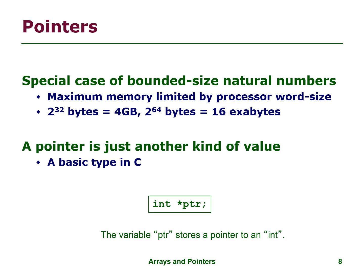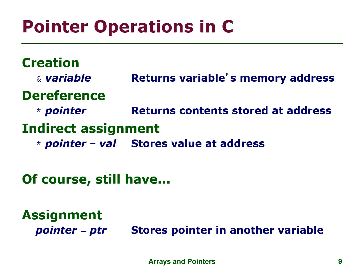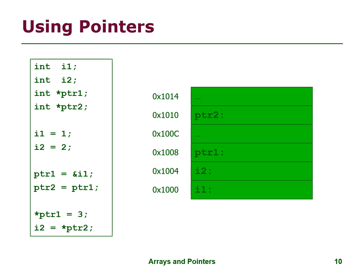The syntax is given below. Pointer operations in C: creation — ampersand variable — returns the variable's memory address. Dereference — star pointer — returns the content stored at that address. Indirect assignment — star pointer equals value — stores a value at the address. We also still have regular assignment — pointer equals ptr — which stores a pointer in another variable. This is how we use pointers.